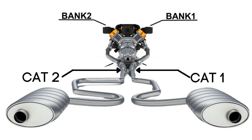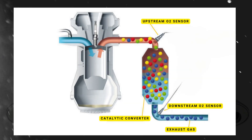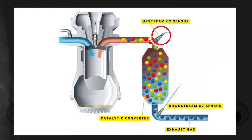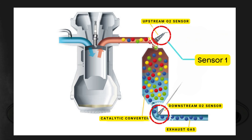Each bank has its own exhaust line, and each exhaust line is equipped with two catalytic converters. Each catalytic converter has two oxygen sensors — an upstream sensor, which we call sensor 1, and a downstream sensor, known as sensor 2.